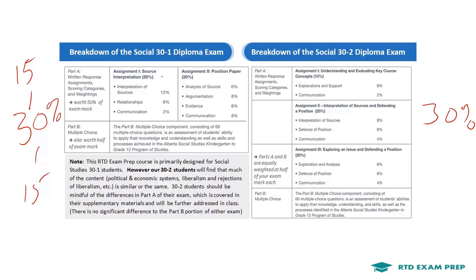To understand the importance of the written component: if the written component is worth 15 marks, then Assignment 1 — the source analysis — is worth 6 of those 15 marks, your essay is worth 9, and then the multiple choice accounts for all 15 of the remaining marks to make up the 30 marks you need for your diploma exam.